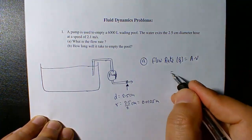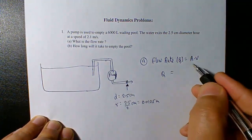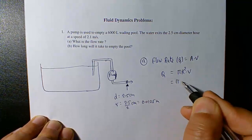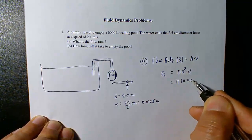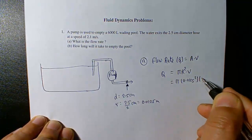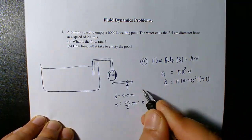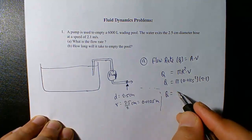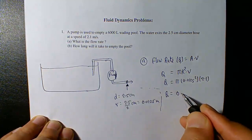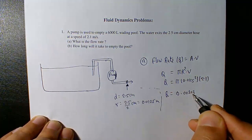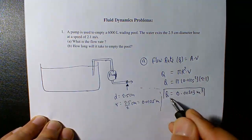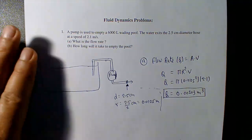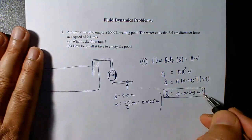The flow rate Q equals pi r squared times the speed. With r equal to 0.0125 meters and speed 2.1 meters per second, the calculation gives a flow rate of 0.00103 cubic meters per second.